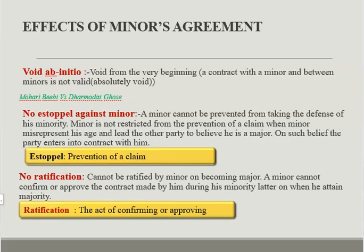The first effect of a minor's agreement is that it is void ab initio — void from the very beginning. An agreement with a minor is not valid. An important case on this point is Mohari Bibi versus Dharmodas Ghose. In this case, Dharmodas Ghose is a money lender and Mohari Bibi is a minor. A mortgage was cancelled, an advance of 8000 rupees was involved, and the contract was held void from the very beginning.